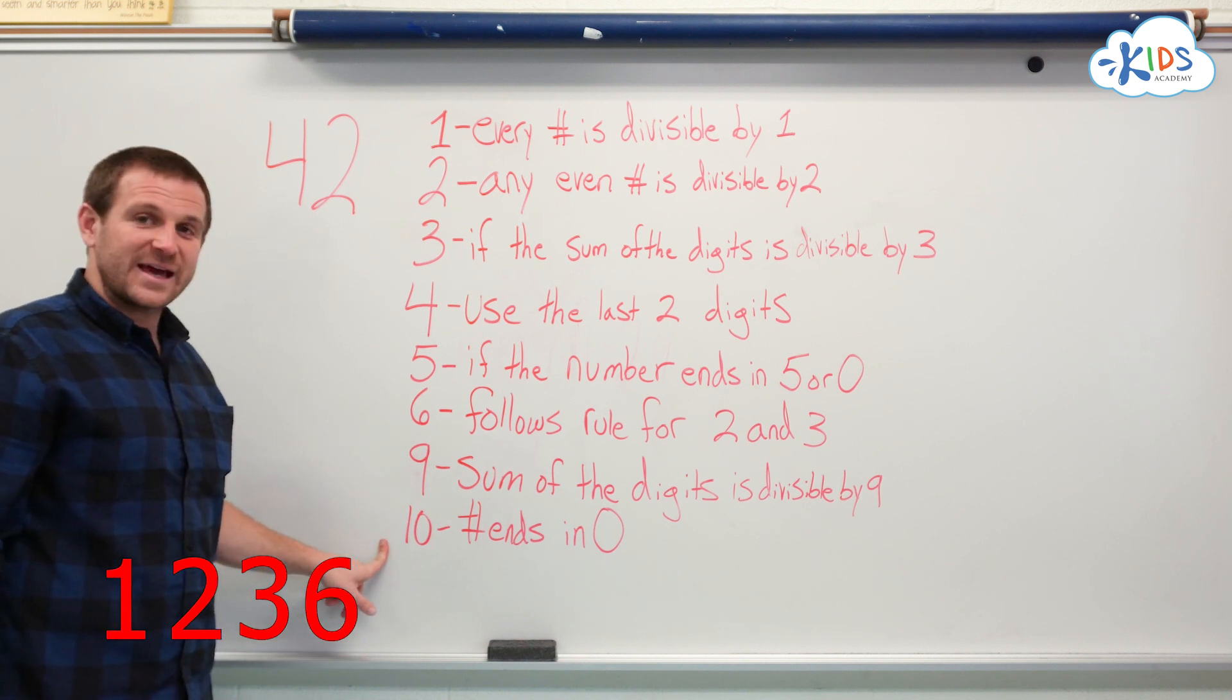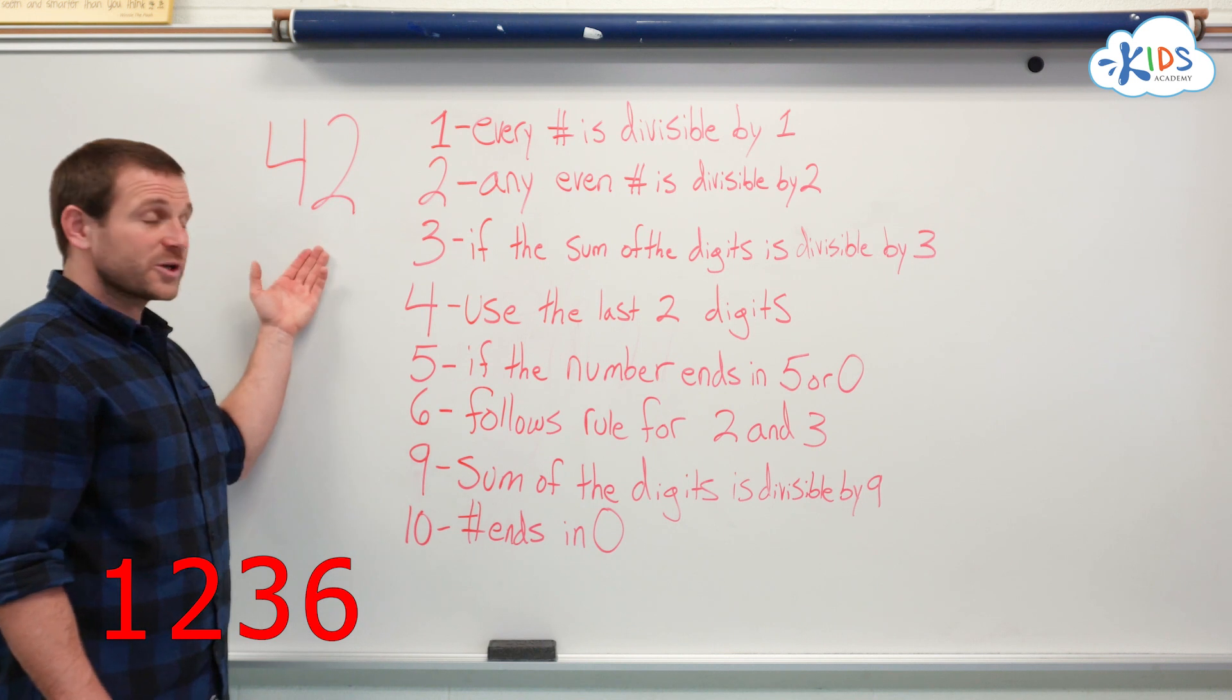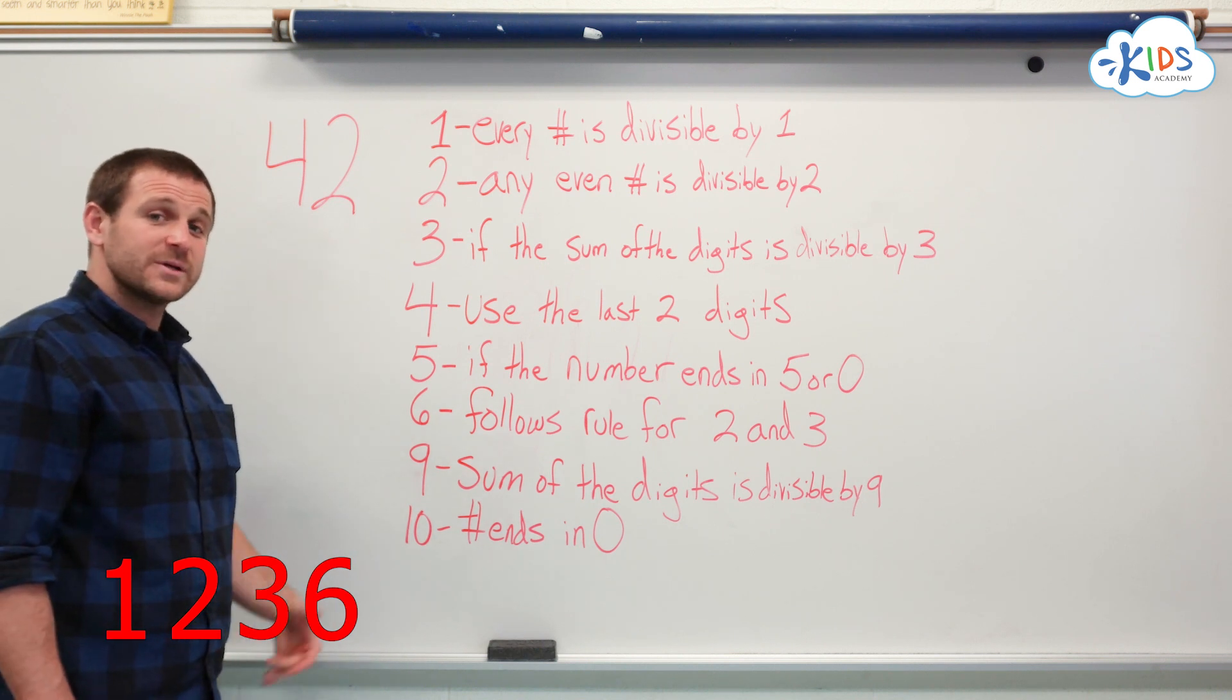The last one is 10. Does the number end in a 0? 42 does not end in a 0. Therefore, it is not divisible by 10.